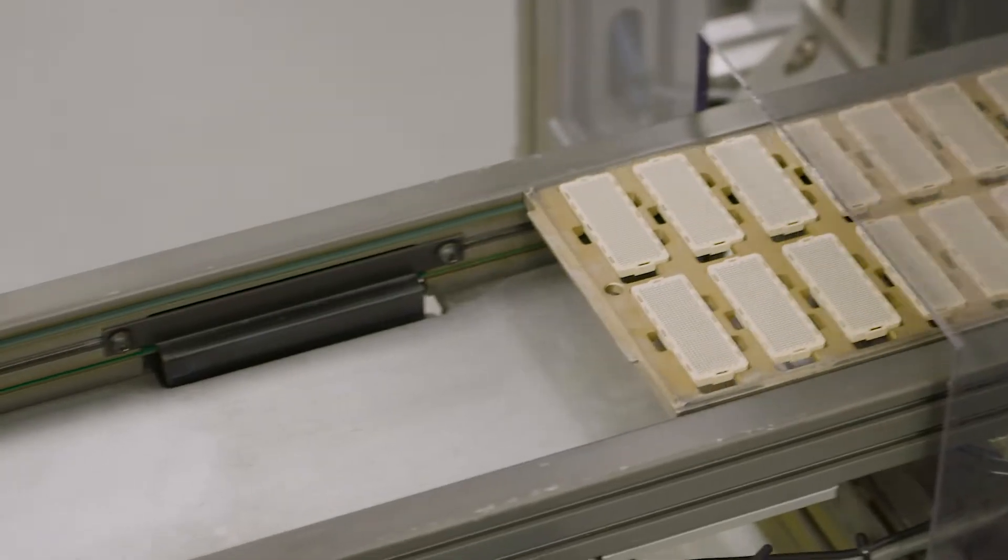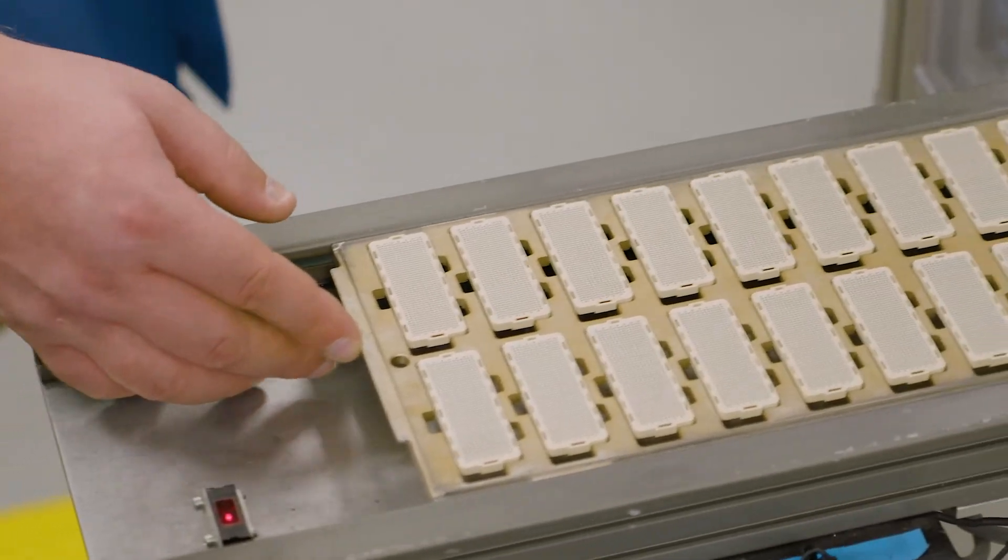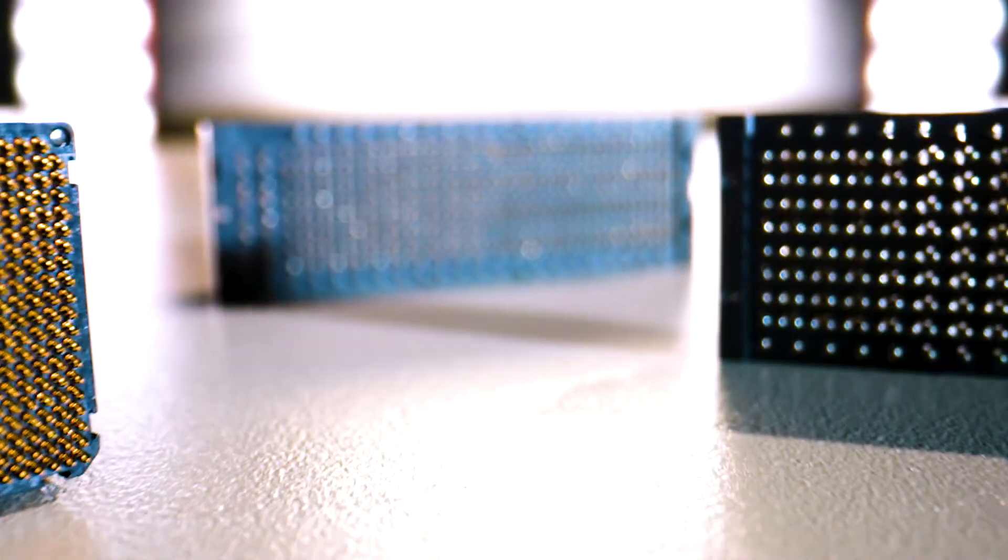But the equipment we have can place 4,800 of those solder balls at one time onto a part, which a lot of our competitors can't do. We're going to take a walk, and I'm going to show you the BGA process.